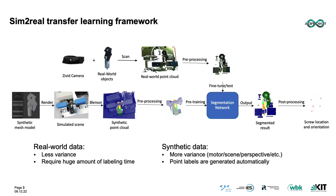To deal with this problem, the Sim2Real Transfer Learning method is applied. Here is the overall framework of our method. First, synthetic point cloud data is generated and pre-processed, and used for pre-training of the segmentation network. Then, a very small amount of real-world data is collected, labeled, and used for network fine-tuning. With the fine-tuned network model, we can get good online segmentation results. Finally, product important information, such as the 6D information of screws, can be provided with post-processing operations.